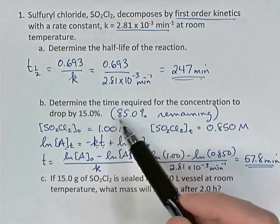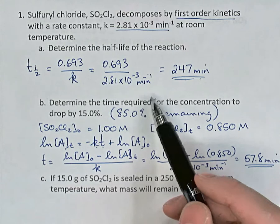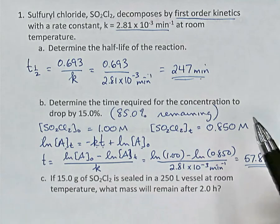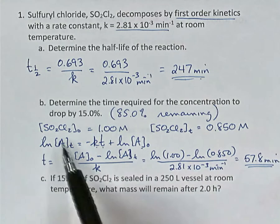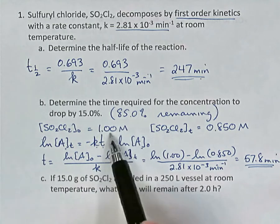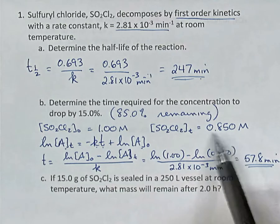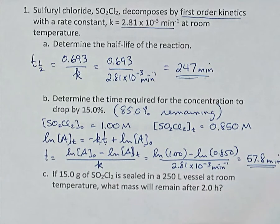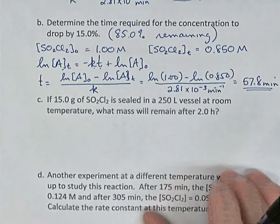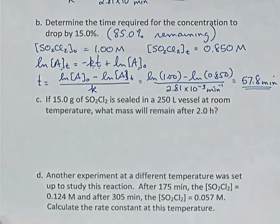Be careful: this is not a linear relationship. If you wanted to know how long to drop by 25%, you cannot reason that since 25% is half of 50%, it would take half the time — that would be wrong. You'd have to go through the same process: set a starting concentration, say 75% remains, and use the integrated rate law.